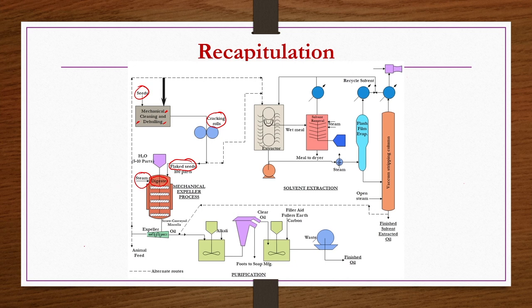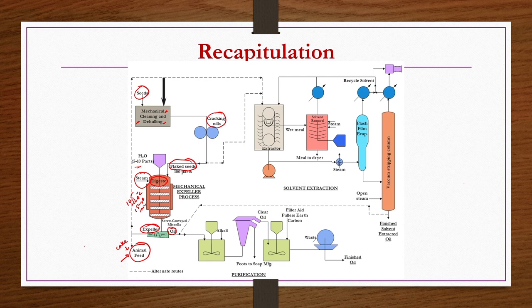Around 100 parts of flaked seeds with 5 to 10 parts of water are cooked in a digester using steam at around 105 to 120 degrees centigrade for 15 to 20 minutes. The mixture or meal obtained is then processed through an expeller to get a crude oil, and the remaining cake is used as animal feed. This entire sequence — cleaning, flaking, cooking, expelling — constitutes the mechanical expeller process.